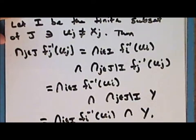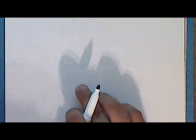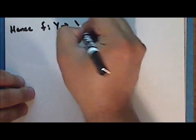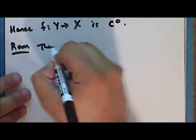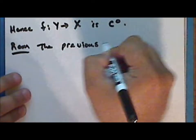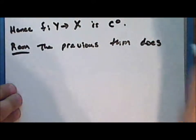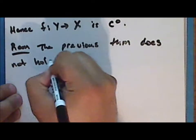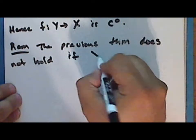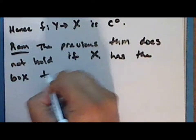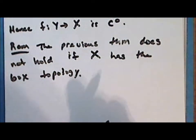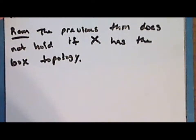Hence the function f mapping Y into the product space X is continuous. Now the previous theorem does not hold in general if X has the box topology, and this is one reason that the product topology is preferred over the box topology for an arbitrary product.